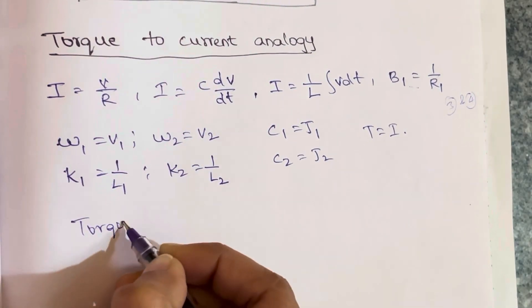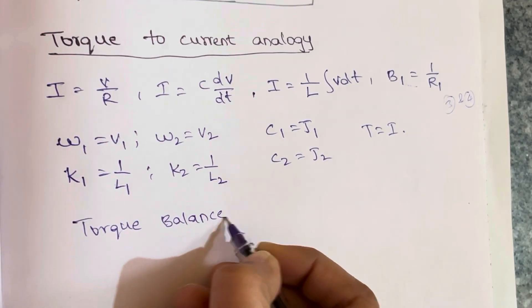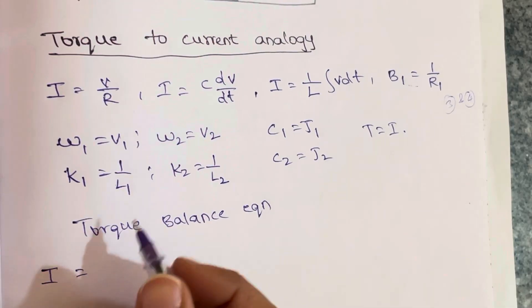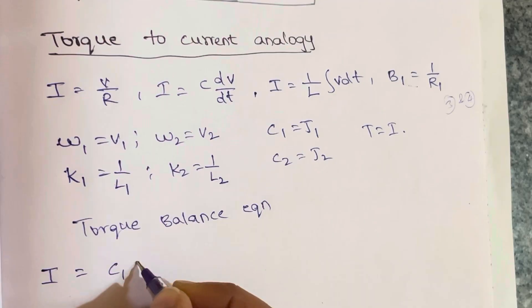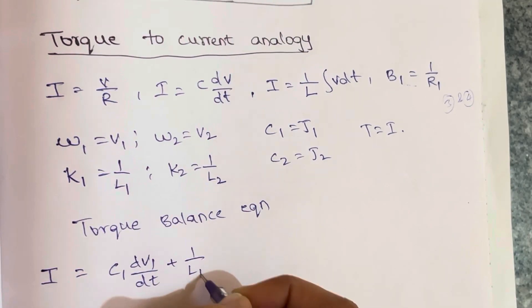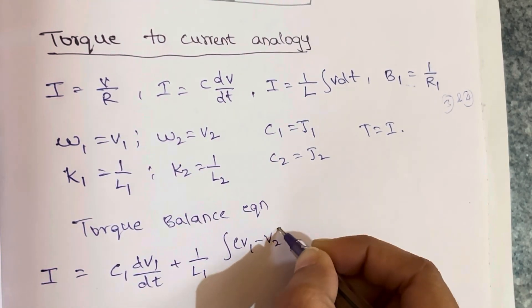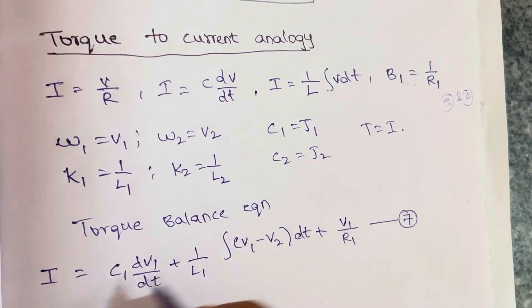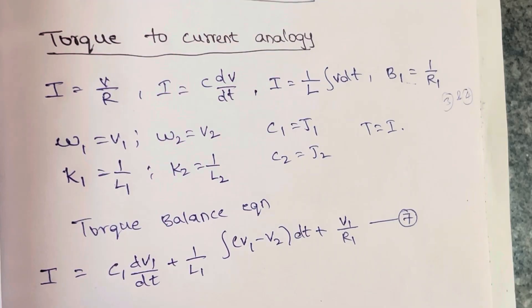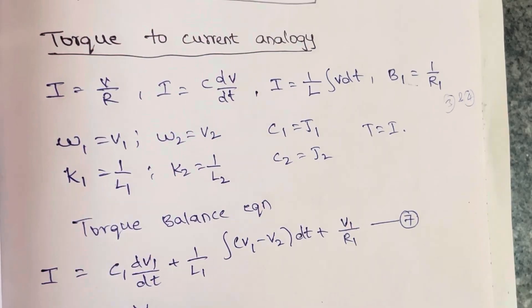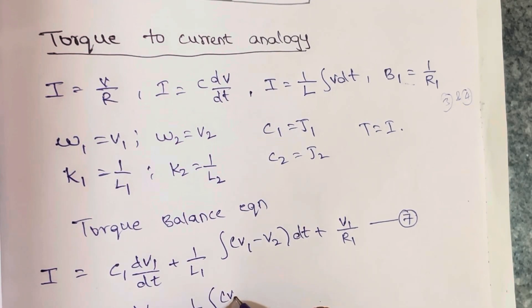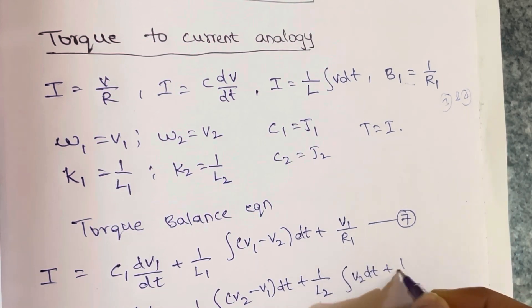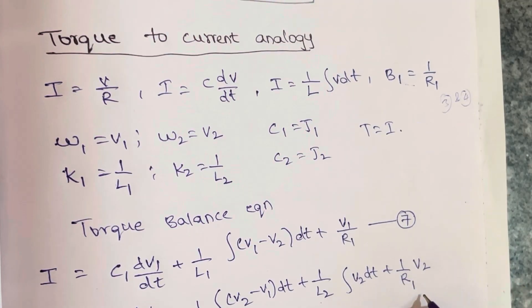The torque balance equation in torque-to-current analogy: substituting into equations 3 and 4 gives — equation 7: i equals C1·dV1/dt plus (1/L1) times the integration of (V1 minus V2) dt plus V1/R1. Equation 8: 0 equals C2·dV2/dt plus (1/L1) times the integration of (V2 minus V1) dt plus (1/L2) times the integration of V2 dt plus V2/R2.